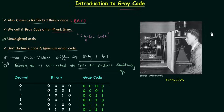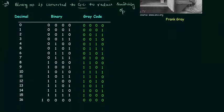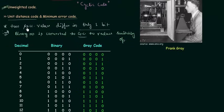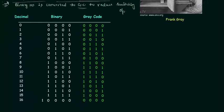Now we will move to a table in which the first column is for decimal numbers from 0 to 16, the second column is for binary numbers, and the third column is for gray code. I will use this table to explain the point that two successive values differ in only one bit in the case of gray code.